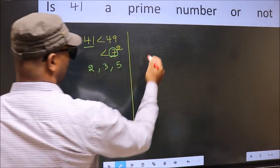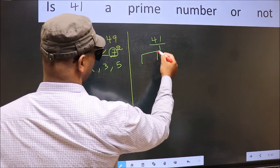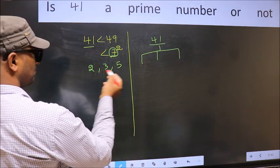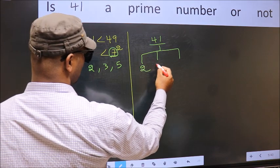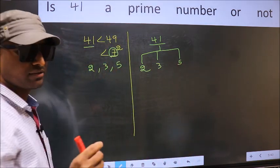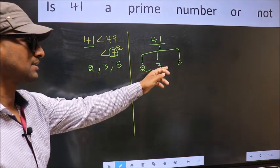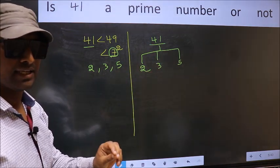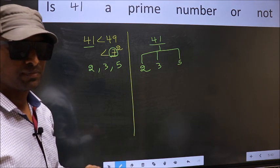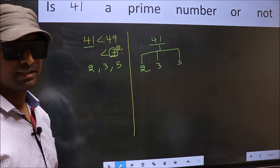Now, for the given number, we check divisibility by these numbers, that is 2, 3, and 5. If 41 is divisible by any one of these numbers, we say it is not prime. Otherwise, we say it is prime. Clear with the method?